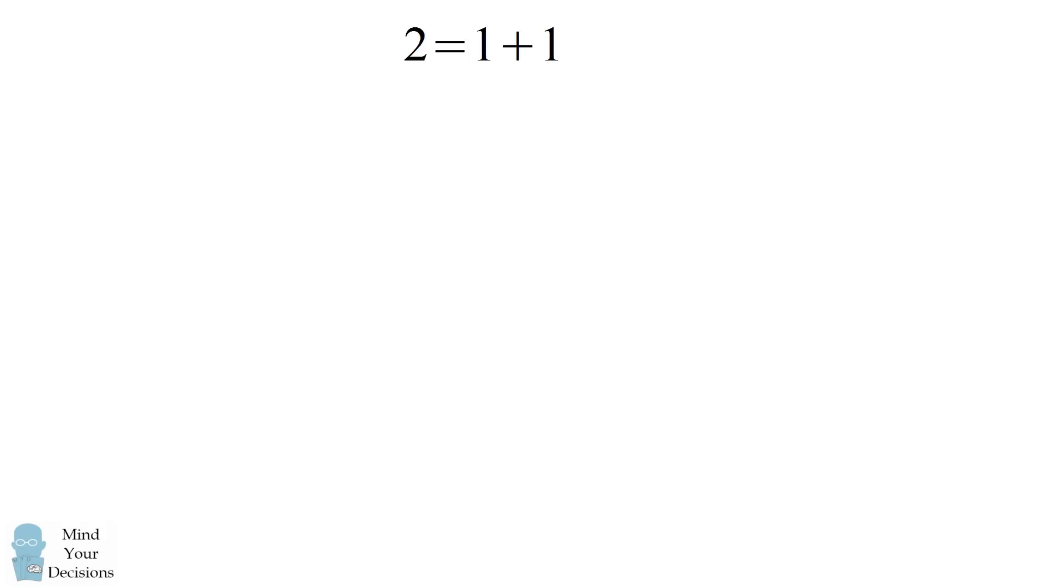Hey, this is Presh Talwalkar. I received an email that I wanted to share with you. Wolfgang came up with a false proof that 2 equals 0. When he showed it to his class, no one could figure out where the mistake was, not even his teacher. So I wanted to share a version of that proof with you and ask, can you figure out where the mistake is?